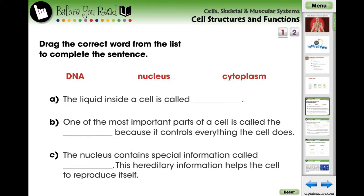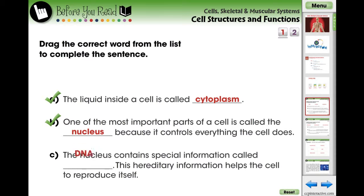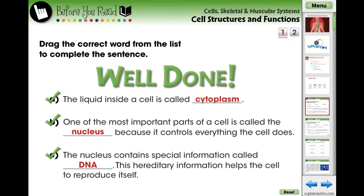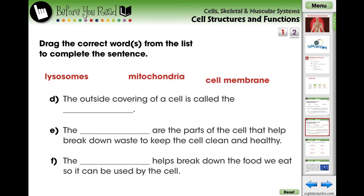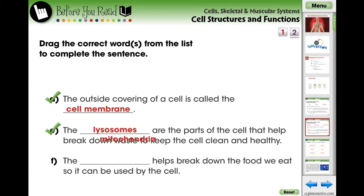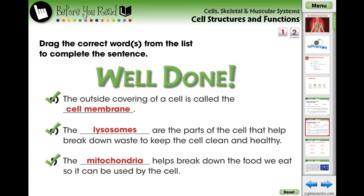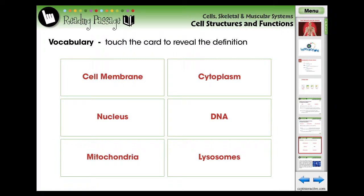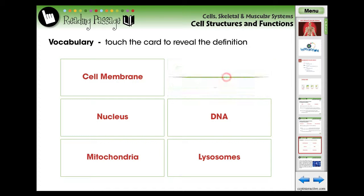The lesson begins with two screen pages of pre-assessment activities designed for the teacher to evaluate what the students already know about the current topic. These questions are in the form of fill-in-the-blank questions. Using vocabulary flashcards, we identify six terms that each student should comprehend prior to reading the following reading passage.